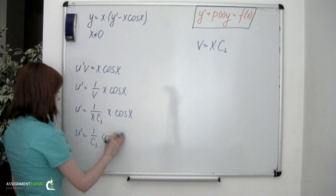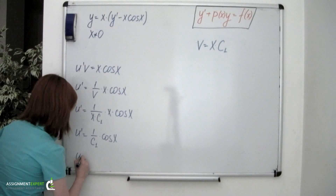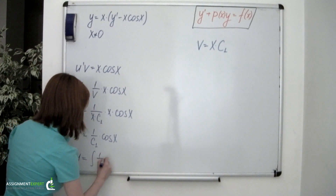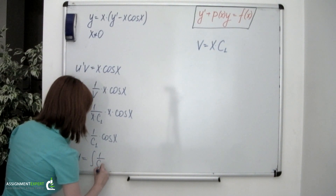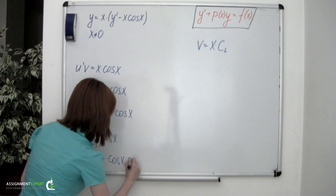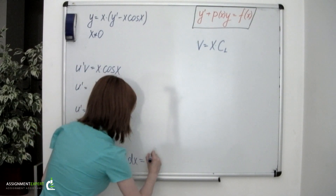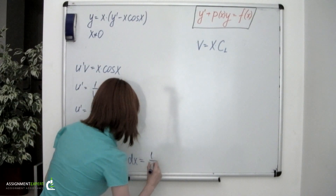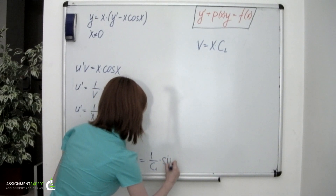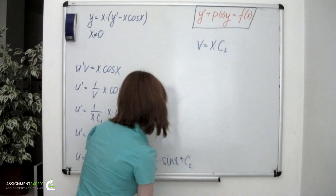We'll integrate this expression in order to obtain an expression for the u function. u' equals 1 over C₁ times cosine of x, so u equals 1 over C₁ times sine of x plus another constant C₂.